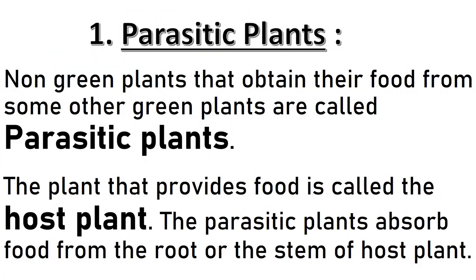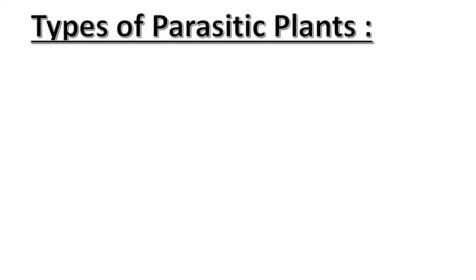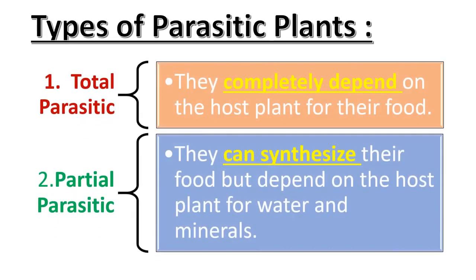Number 1: Parasitic plants. Non-green plants that obtain their food from some other green plants are called parasitic plants. The plant that provides food is called the host plant. The parasitic plants absorb food from the root or the stem of the host plant. Based on the dependency of these plants on the host, they can be categorized into two: Number 1, total parasitic — they completely depend on the host plant for their food; Number 2, partial parasitic — they can synthesize their food but depend on the host plant for water and minerals.